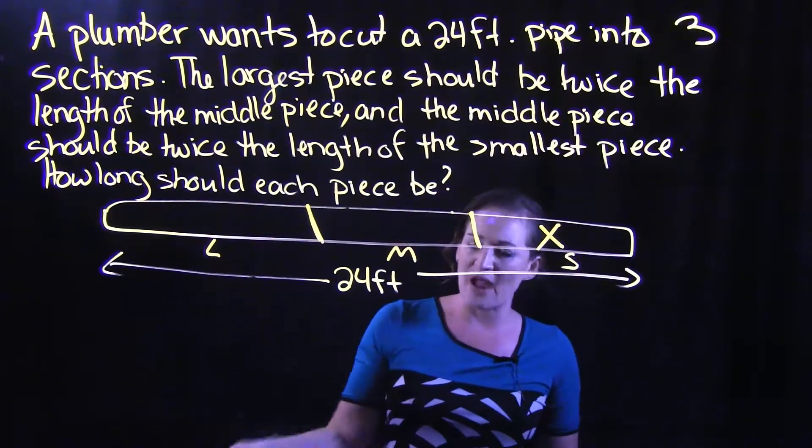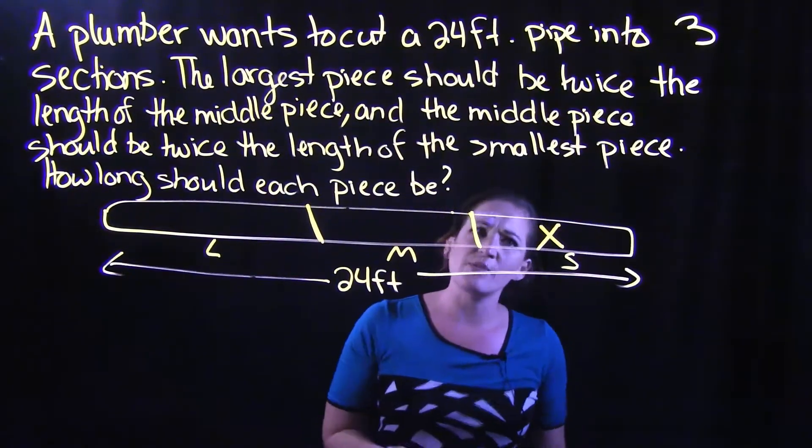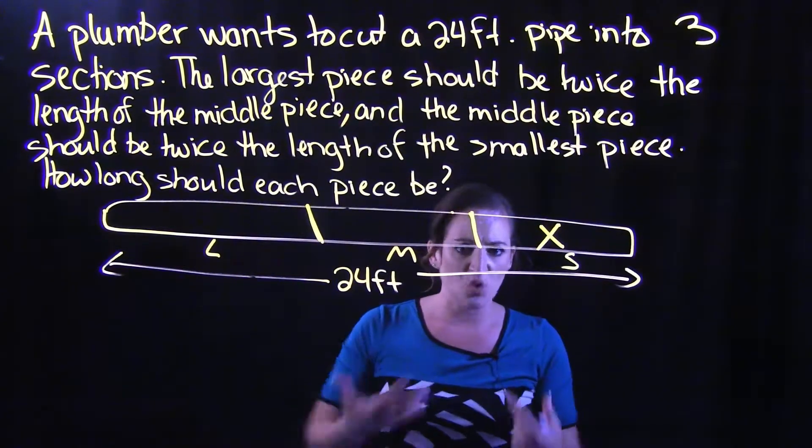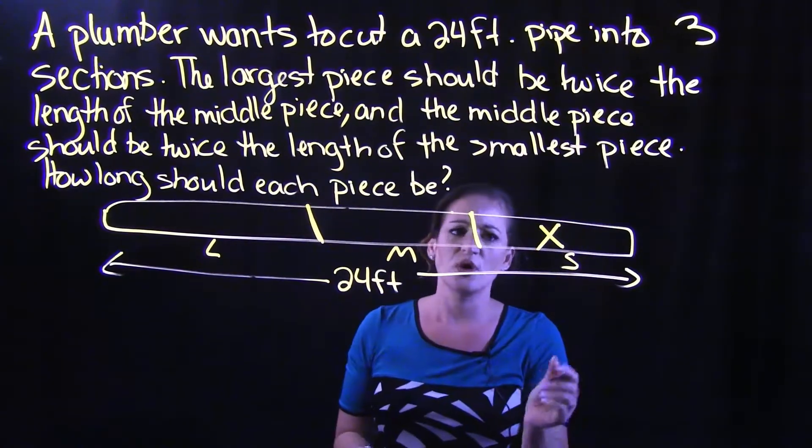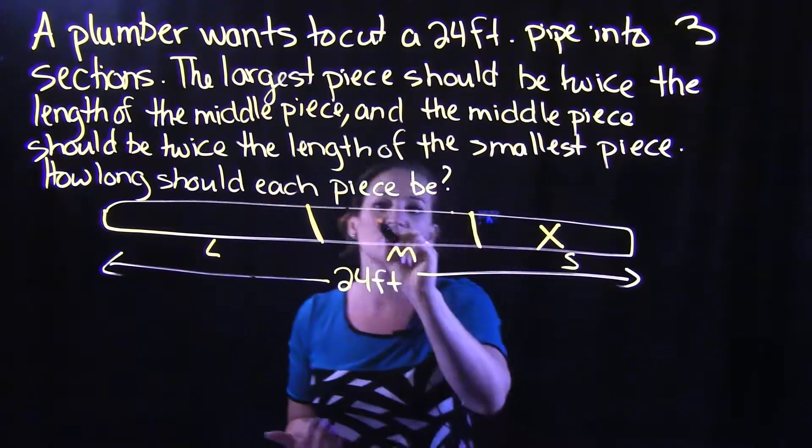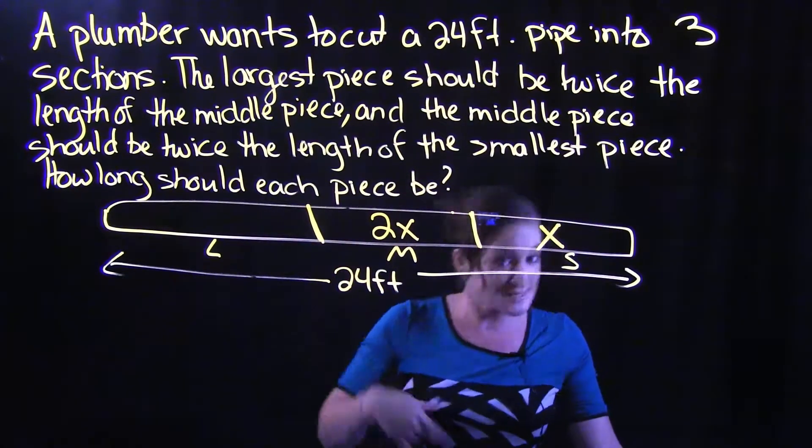So if I want to double X, if I want twice X, what would that look like? Doubling X or twice X, that's saying multiply by 2. So if I want to multiply X by 2, X times 2 is just 2X. Therefore, our middle piece is 2X. The middle piece is twice the smallest.